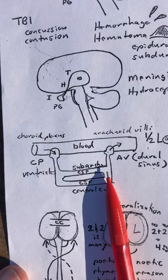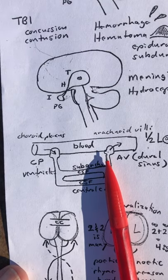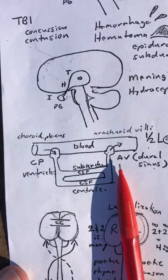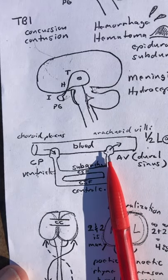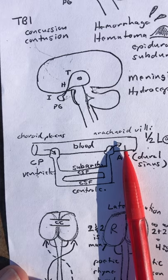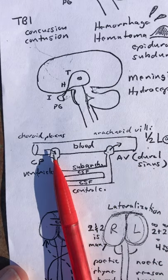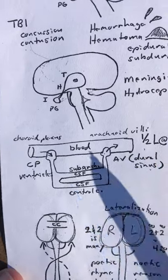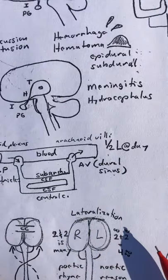The fluid moves into the subarachnoid spaces and down eventually into the central canal of the spinal cord. But they all come back to the subarachnoid spaces, go to the top of the brain at the superior sagittal sinus, where there are arachnoid villi, which allow the fluid to move back into the blood. So you borrow from the blood, you return to the blood, approximately half a liter per day.